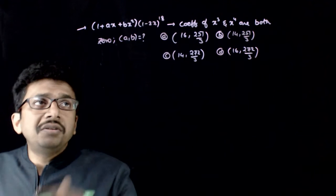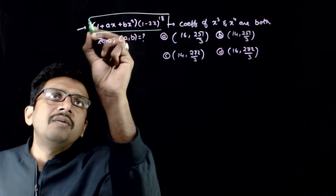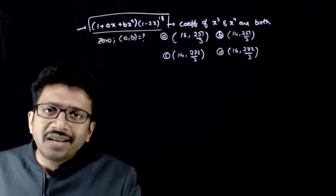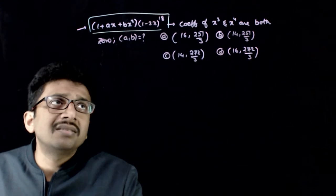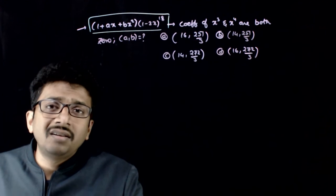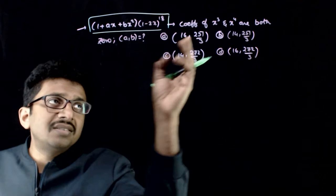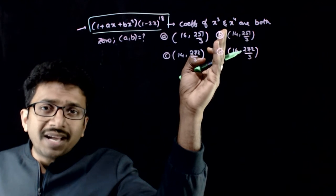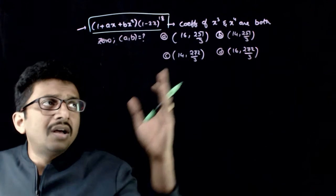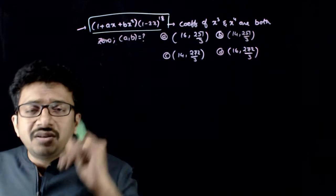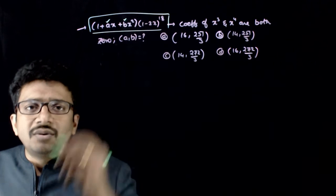Welcome students. In this question, you are given the expression (1 + ax + bx²)(1 - 2x)^18, and you are given that in the expansion of this, the coefficient of x³ and x⁴ are both zeros. If that is so, what should be the unknowns a and b?